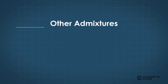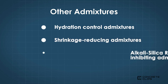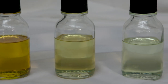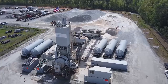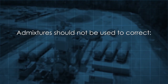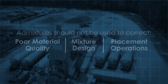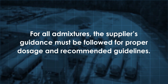There are other admixtures including hydration control admixtures that can stop hydration and restart it for situations requiring extended storage of fresh concrete. Shrinkage reducing, alkali silica reaction inhibiting, and coloring admixtures are also occasionally used in paving concrete. Admixtures are an important component of concrete mixtures to achieve desired short-term and long-term properties; however, they should not be used to correct for other deficiencies such as poor material quality, mixture design, or placement operations. For all admixtures, the supplier's guidance must be followed for proper dosage and recommended guidelines.